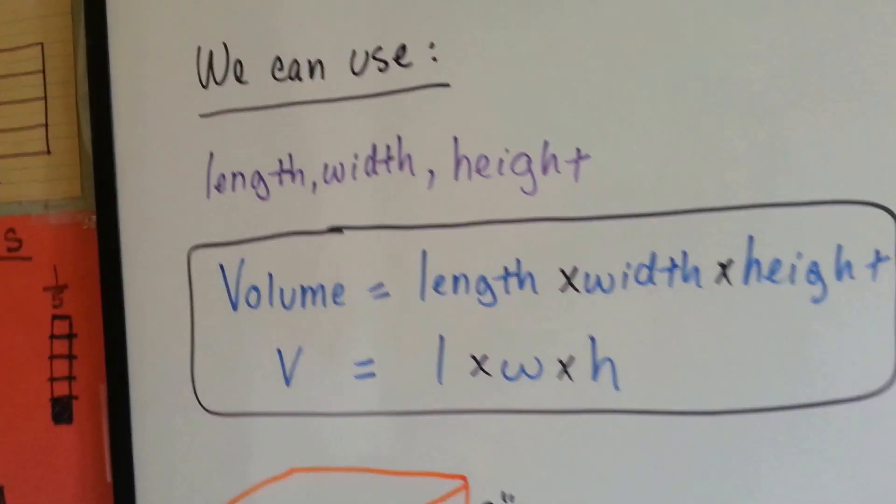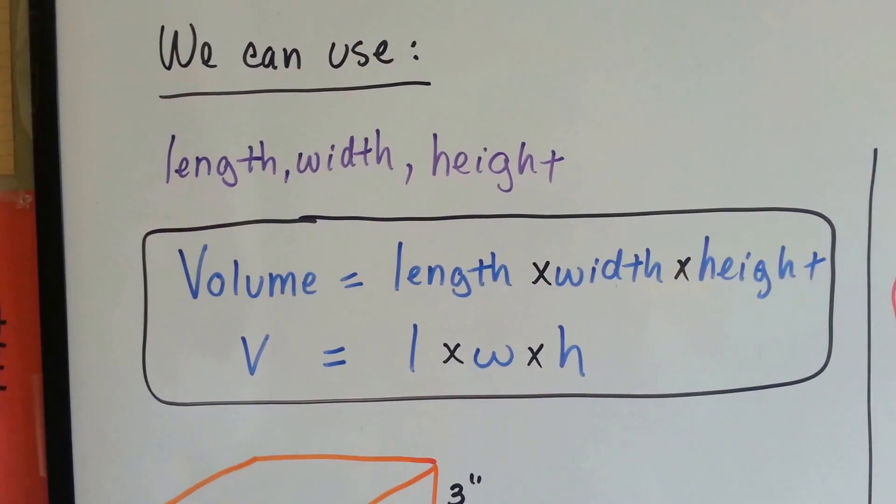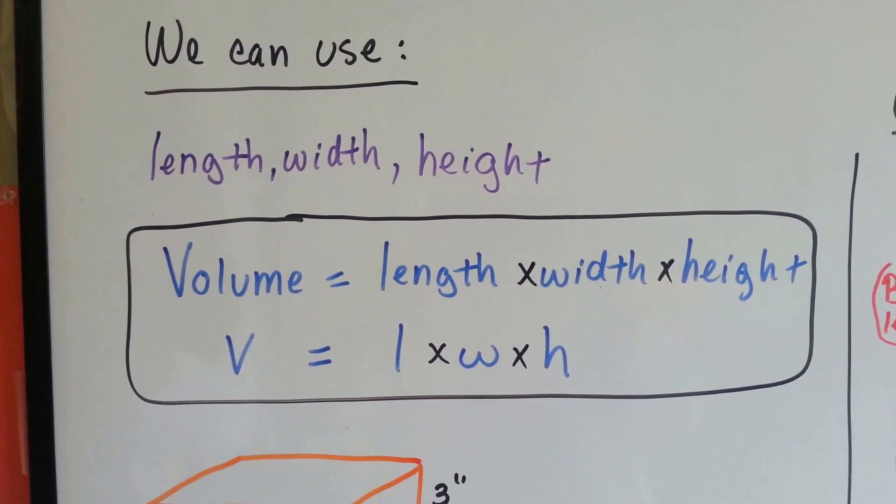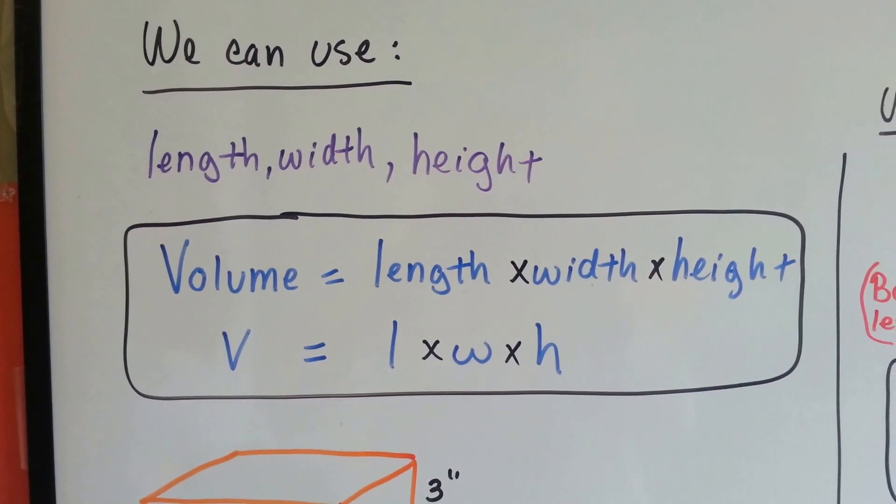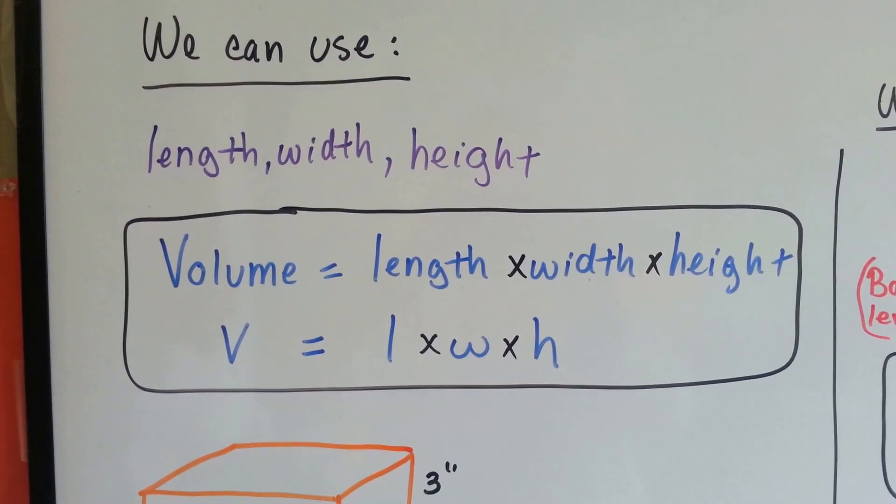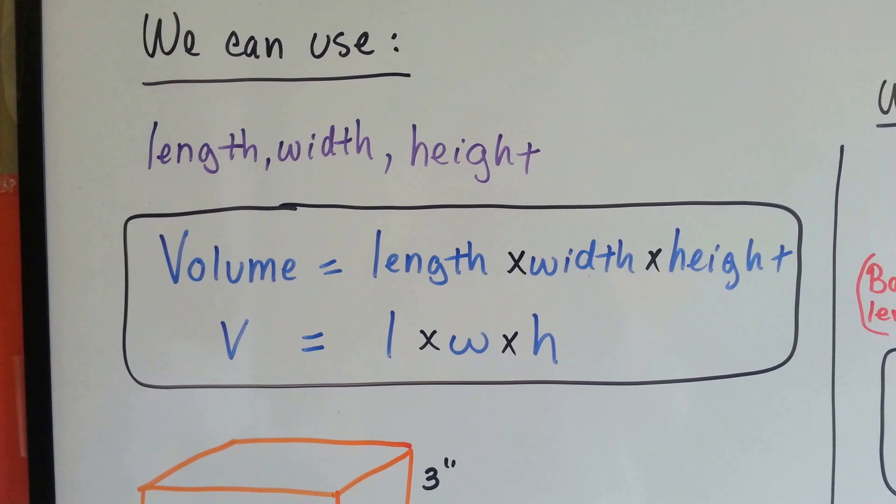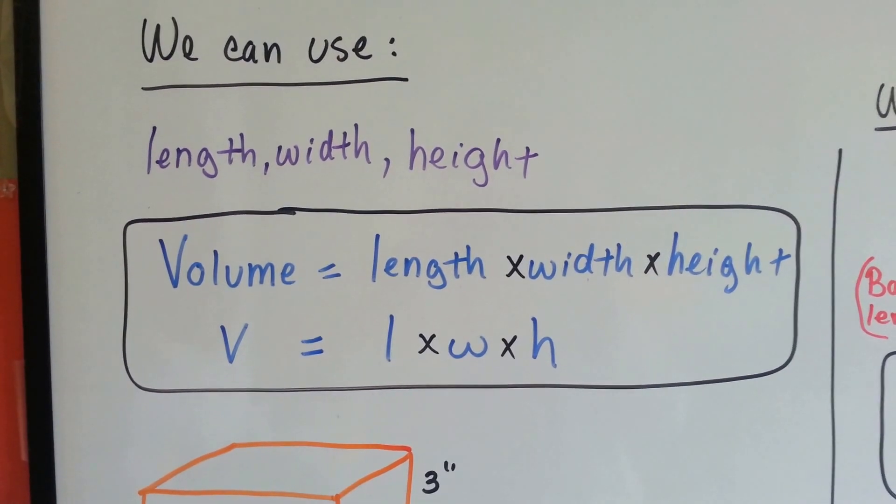We can use length, width, and height to find volume. Volume formula is length times width times height. It's also seen as V equals L times W times H.